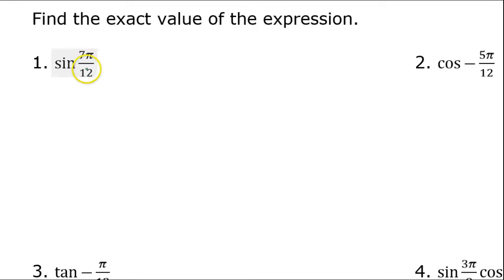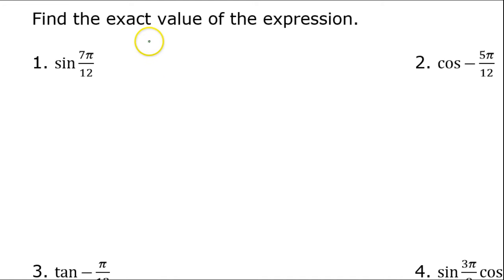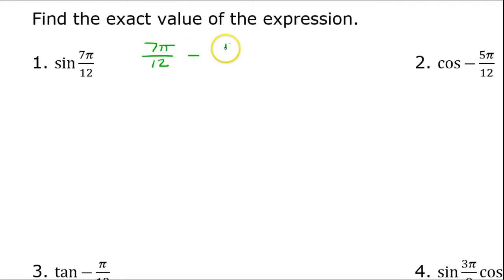First I need to take this angle and split it apart into two angles that are special angles, so let me focus on that. If I take 7π over 12 and I subtract a special angle — I usually use π over 4 — because this almost always gives me another special angle. Let's see what we get when I do this.